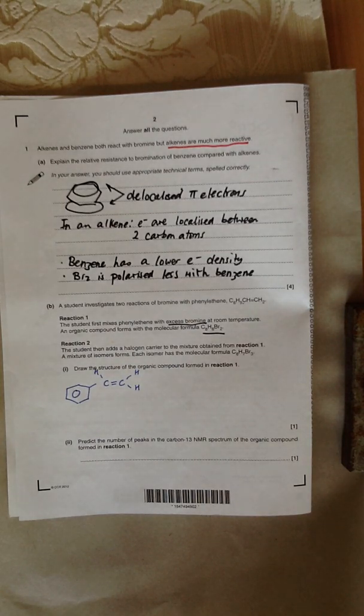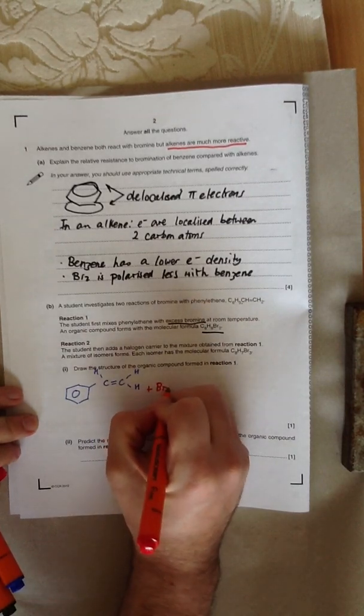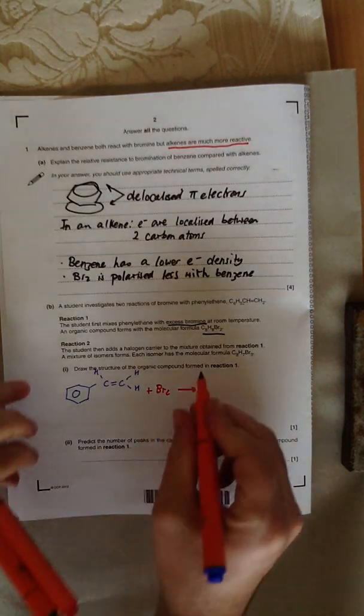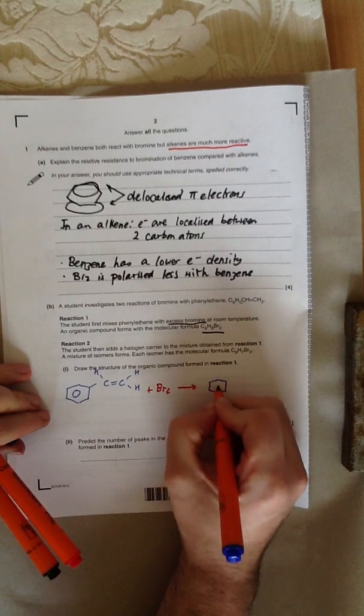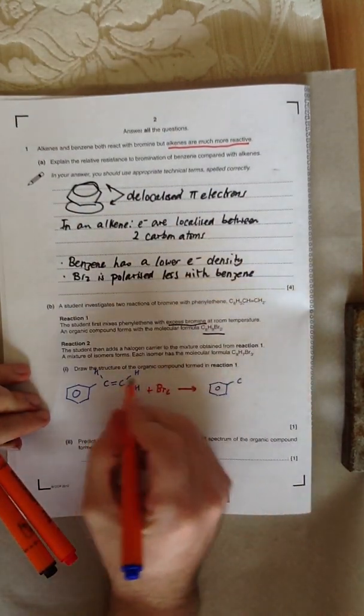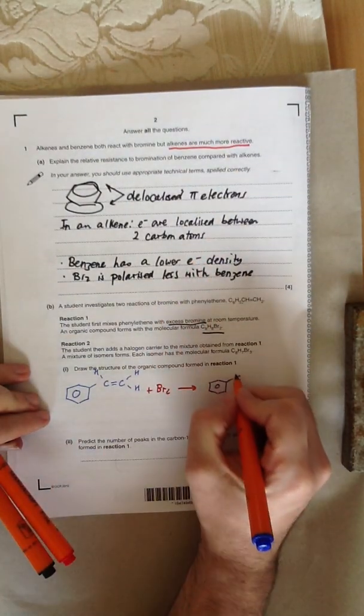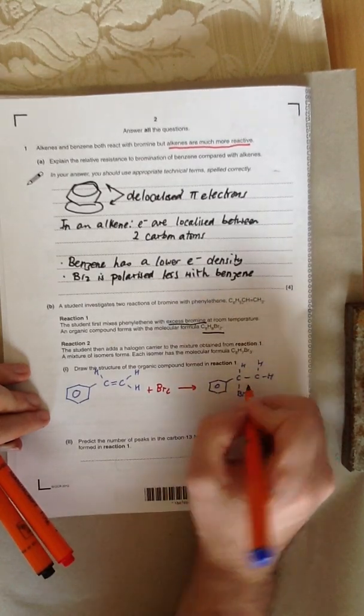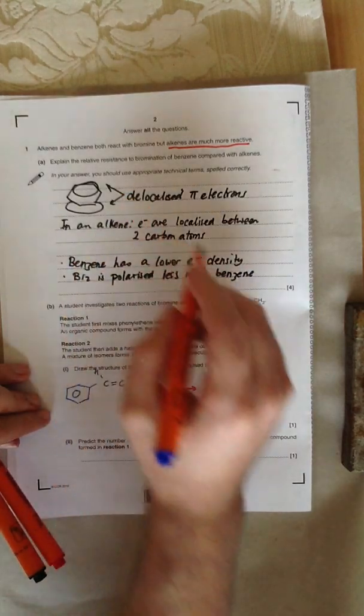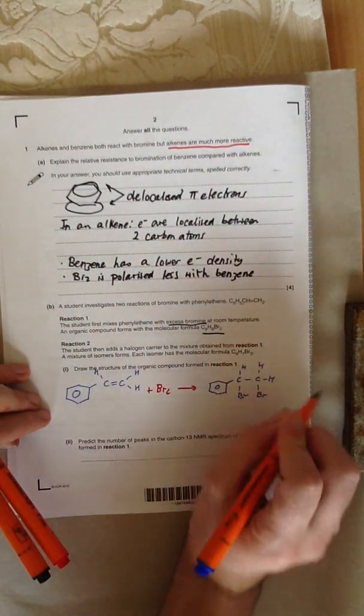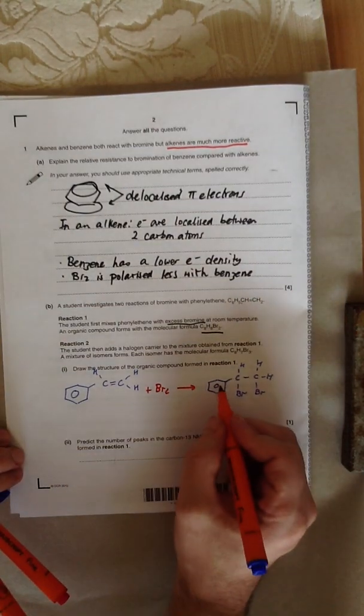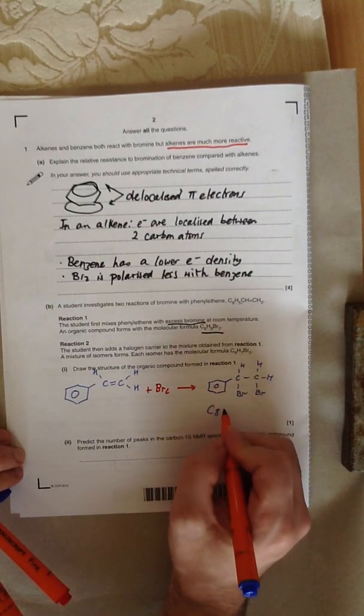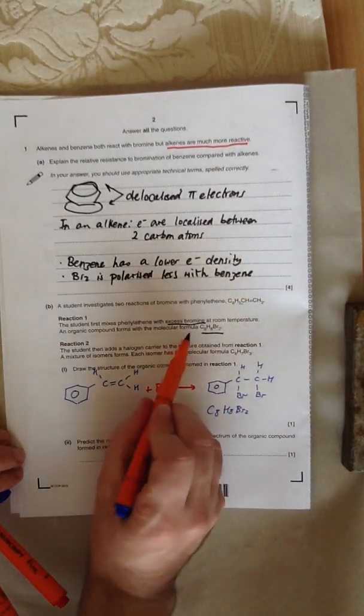This is across that alkene double bond to give us the dibromo compound. The question you might wonder is, how do you know that the Br2 doesn't add on to the benzene ring? Well, the start of the question talks about the resistance of benzene to bromination. We know that the Br2 is going to add across to the alkene, not to the benzene, because the beginning of the question tells you that it's the alkene that reacts. Let's count up the atoms: that's C678H12345678Br2, so it also agrees with the molecular formula.